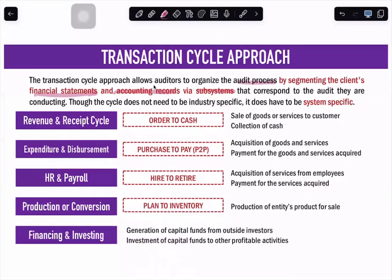The normal cycles that we have are: the revenue and receipt cycle, expenditure and disbursement cycle, HR and payroll, production or conversion, and financing and investing.